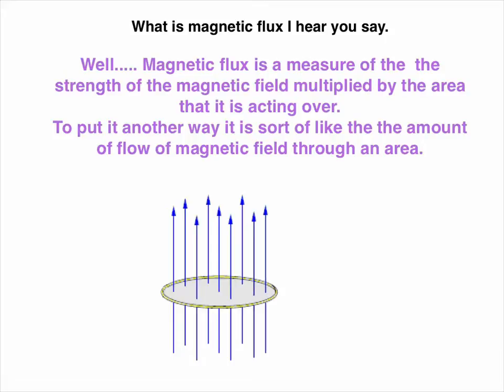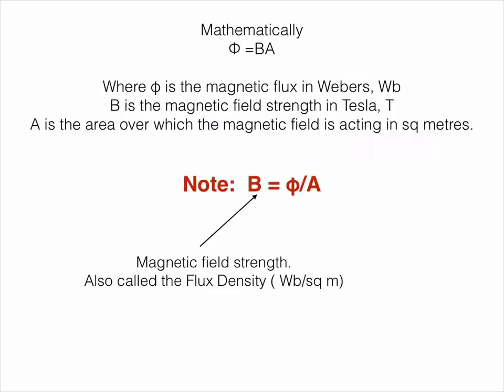Mathematically, you can determine the amount of magnetic flux by measuring the strength of the magnetic field and multiplying it by the area that it's acting through. There we go. Phi equals B times A, the magnetic field strength times the area that it's acting through.